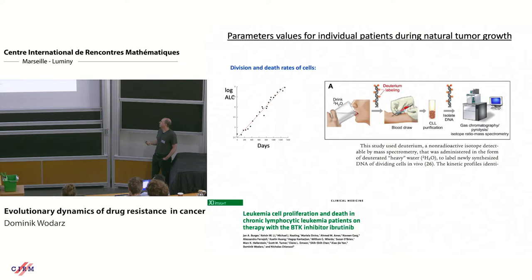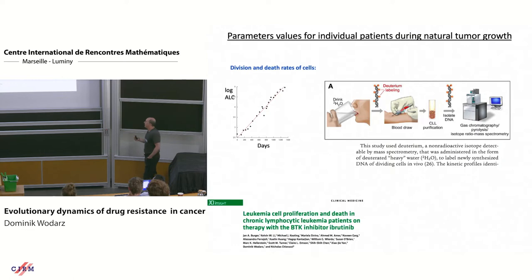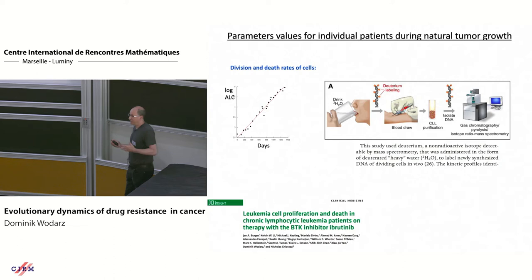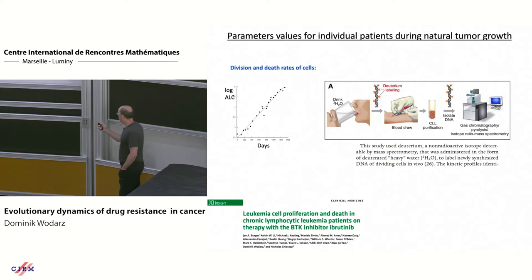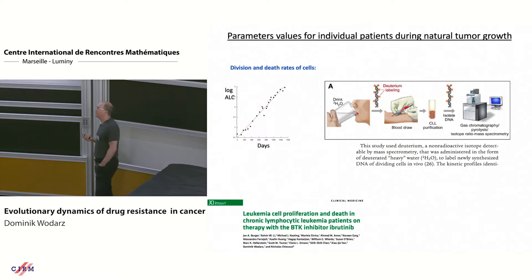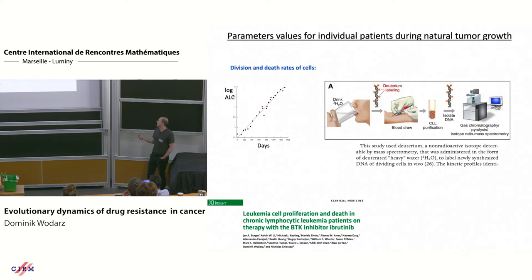How can we measure parameters? This tumor lends itself to parameter measurement. One important aspect is that when a patient is diagnosed, you don't put them on treatment right away - you wait until the bone marrow is sufficiently impacted. So you have a relatively long phase where you can observe the disease and quantify the dynamics. What can be done is giving patients heavy water to drink - a DNA label that gets taken up - then you can follow the label dynamics and calculate division rates and death rates. Typically during the natural growth phase the tumor grows exponentially, so you can calculate doubling time, division rate, and death rates for each individual patient.